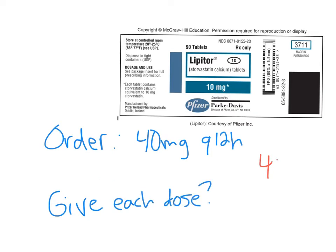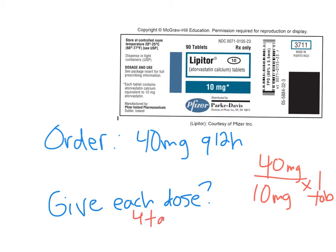Using our D over H times Q formula, our ordered dose is 40 milligrams in a single dose, since that's what they're taking every 12 hours. And then according to our medication label up there at the top, every dose is 10 milligrams in each one tablet. When we take 40 divided by 10 times one, that means our patient needs four tablets in each dose to get that 40 milligrams.